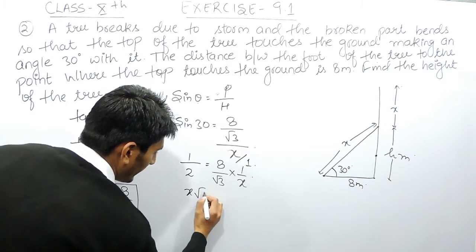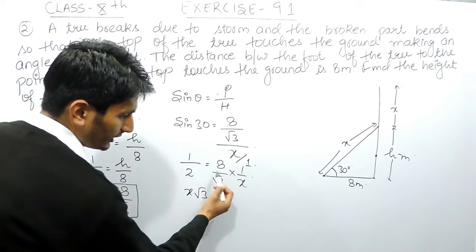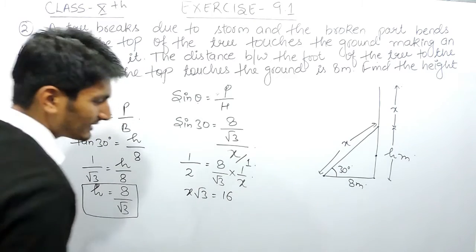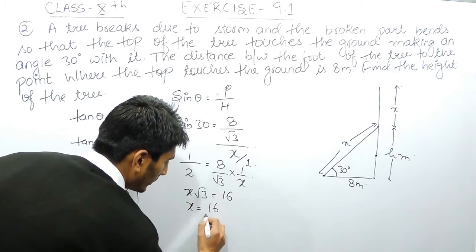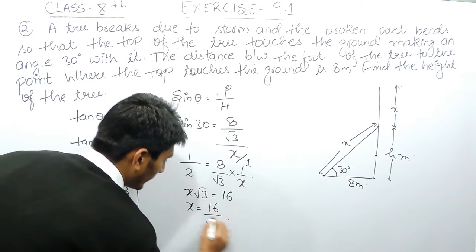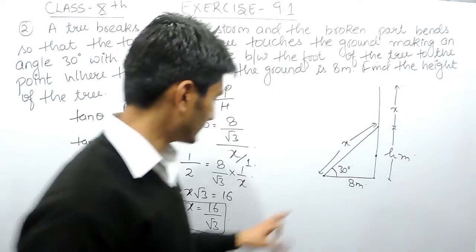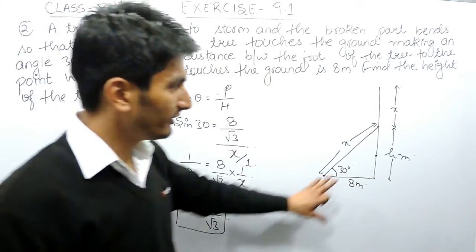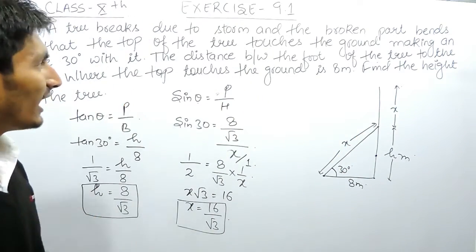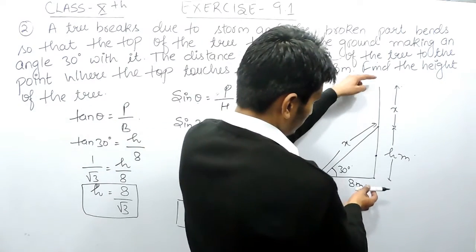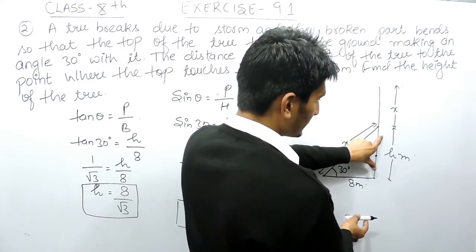Cross-multiplying, x·1 = 2 × 8/√3, so x·√3 becomes 16 — that is, x = 16/√3. Now we know the value of x as 16/√3 and the value of h as 8/√3, and we have to find the total height of the tree, which equals x plus h.